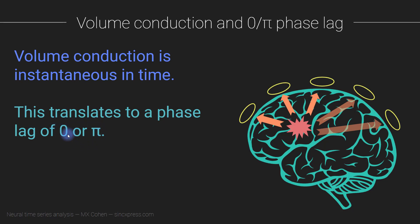This is not about the phases themselves, but about the difference of the phase angle time series between two electrodes. If the phase angle time series is instantaneous and identical, their difference is obviously going to be zero — that explains why volume conduction predicts a phase lag of zero. Pi comes from the fact that electrical fields form dipoles, with a sink and a source, so the flow of ions is positive in one direction and negative in the other.